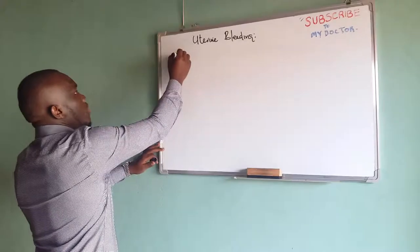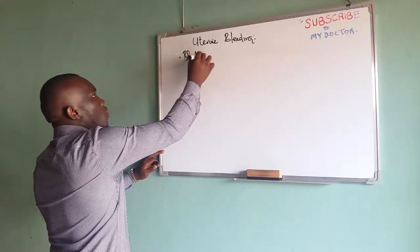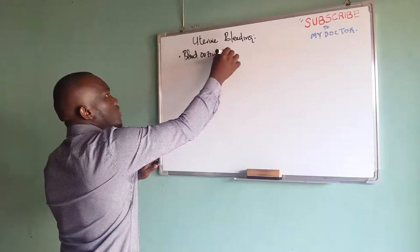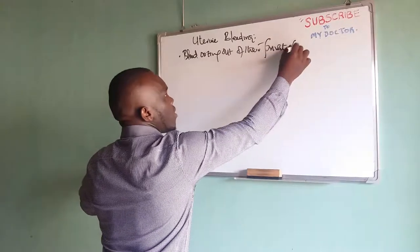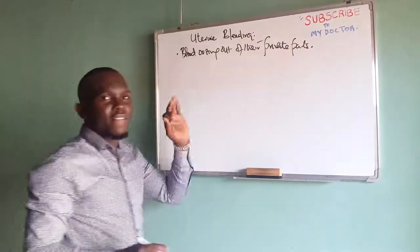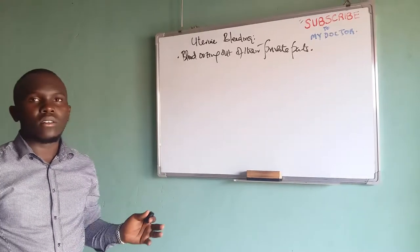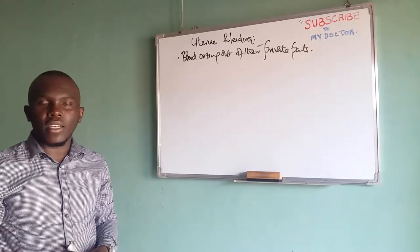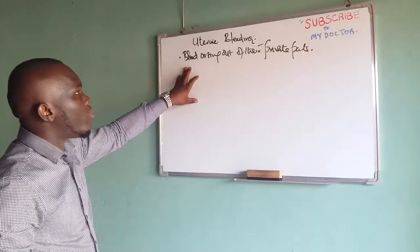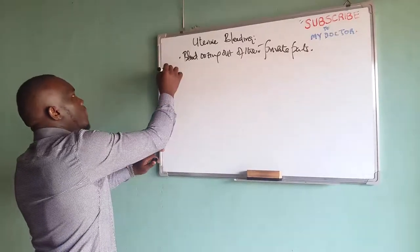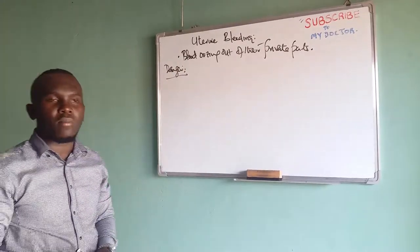Normally we have blood oozing out of their private parts. This is a very common concern to so many people. When you see this, you ask yourself, am I dying or what? It's a very common problem, but we need to know what danger is associated with it.